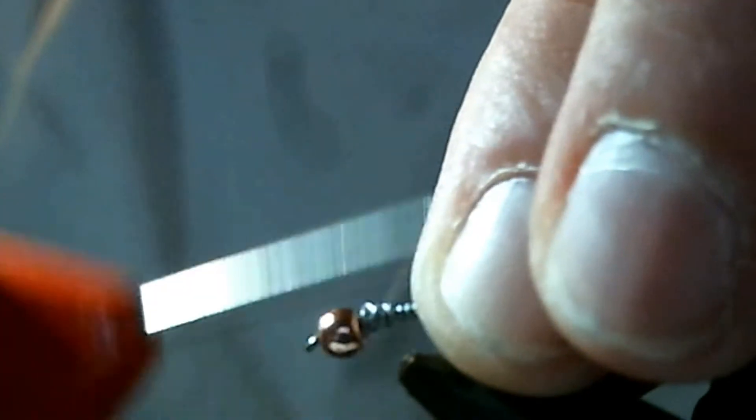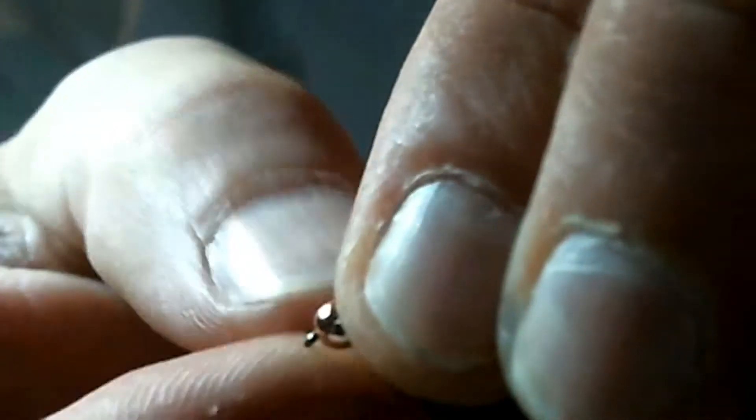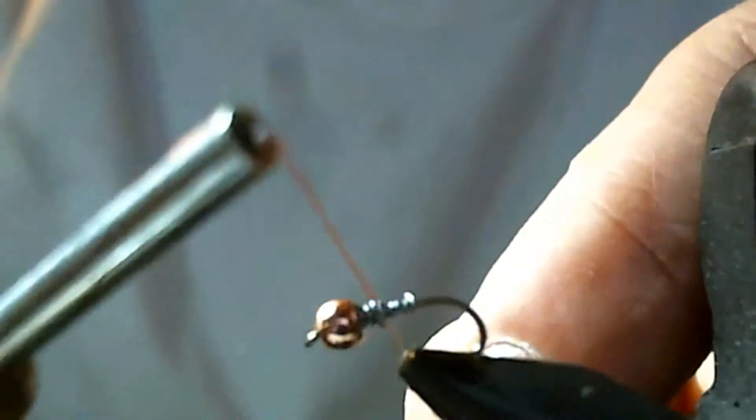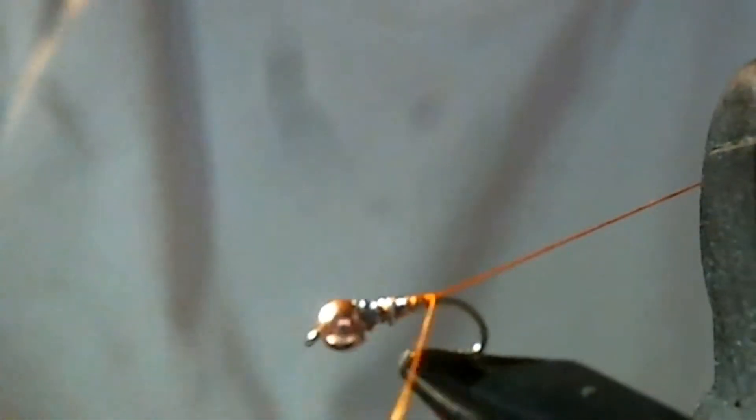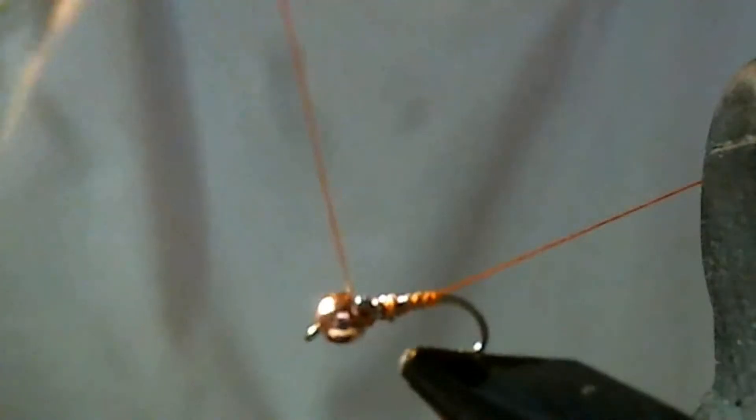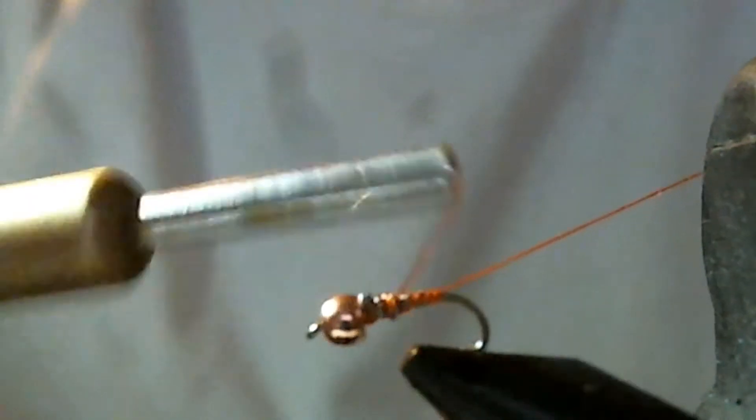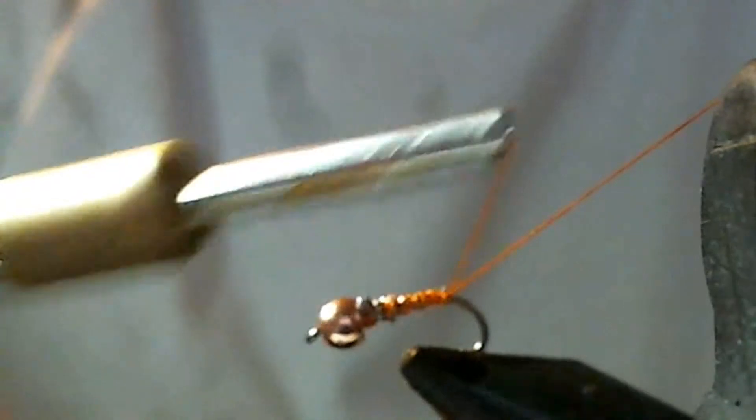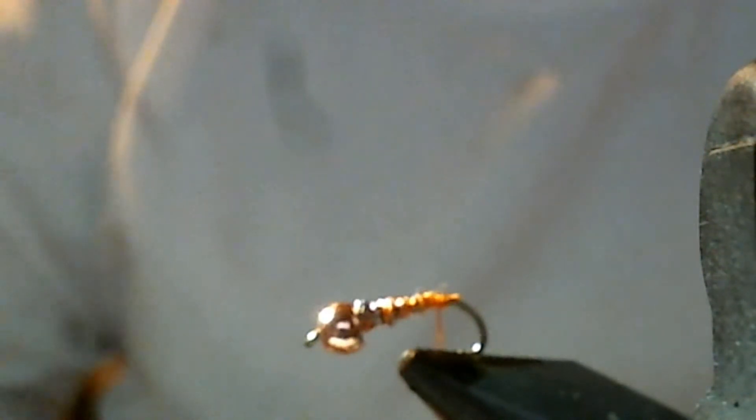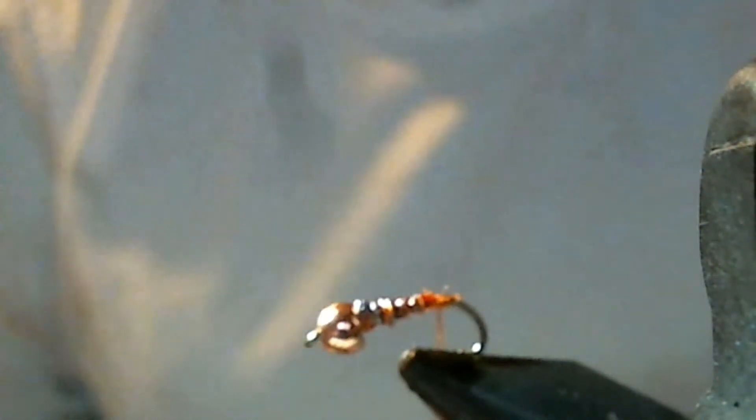I learned things from Orvis' podcast and other tiers. Just break your lead off. And you can cover it with dubbing, so don't worry about how your little lead looks. Tie your thread in. Now, I like to start building the body up. Now, you just cut this off. Wait till it dries.